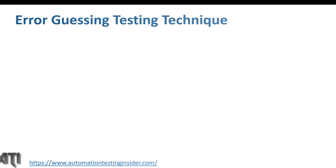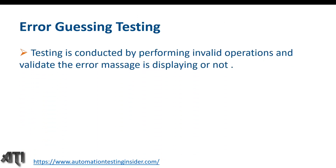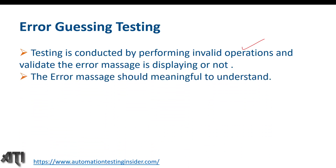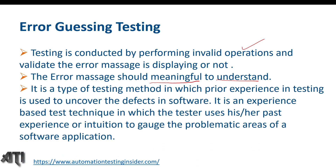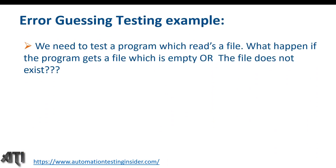Looking at more about error guessing: testing is conducted by performing invalid operations and validating that meaningful error messages are displayed. It is a type of testing method in which prior experience is used to uncover defects. The tester uses past experience and intuition to identify the problematic areas of the software application.